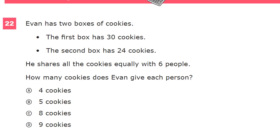This is the Grade 3 math practice test for TN Ready. This is question number 22. Evan has two boxes of cookies. The first box has 30 cookies. The second box has 24 cookies. He shares all the cookies equally with six people. How many cookies does Evan give each person?